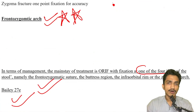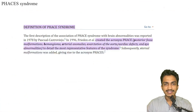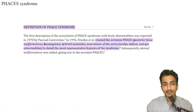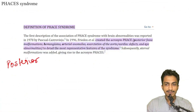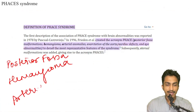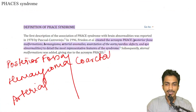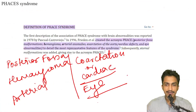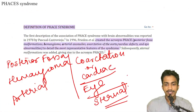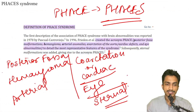PHACES syndrome: I could not find it in Bailey, Sabiston, or Schwartz, so some questions are expected from sources not in standard books. The acronym stands for Posterior fossa malformation, Hemangioma, Arterial anomalies, Coarctation of aorta or cardiac defects, Eye abnormalities, and Sternal malformation — so it was PHACE, now it is PHACES. The answer should be posterior fossa malformation, hemangioma, arterial anomalies, coarctation, eye, and sternal malformations.